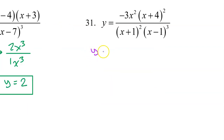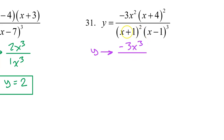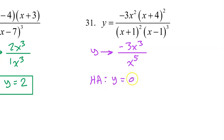For number 31, we must discover the leading terms of the numerator and denominator to compare degrees easily. As x approaches infinity or negative infinity, only the x will matter, not the plus 4. So we have negative 3x squared times x, which is negative 3x to the third power. In the denominator, only the x and the x will matter — not the plus 1 or minus 1 — so this is x squared times x to the third power, giving us x to the fifth power. When the degree of the denominator is greater, there is always a horizontal asymptote at y equals 0.